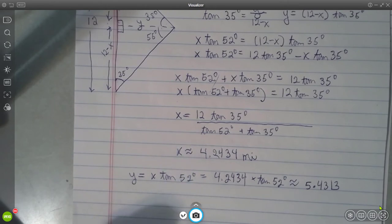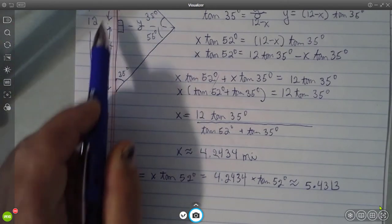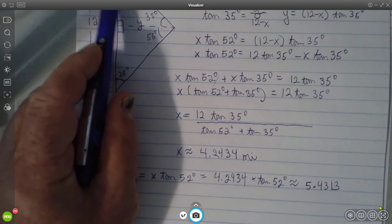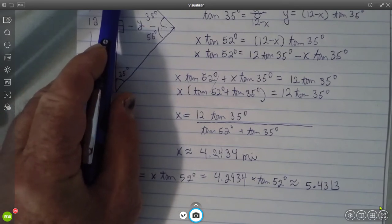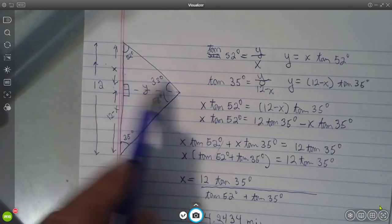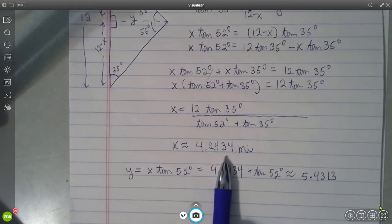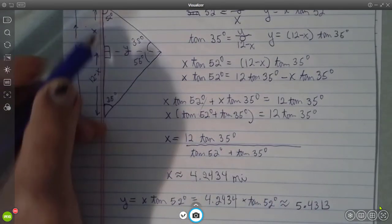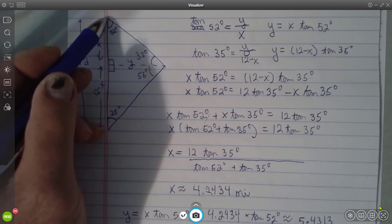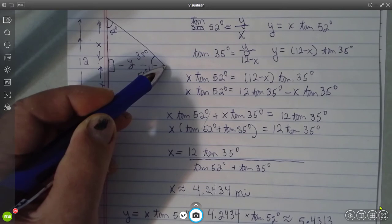The next question is, how far down the shore is that point? Well, from the location of the northern plane, when it got the signal, it would be x or 4.2434 miles. And how far is the ship from the plane at the moment the distress signal was picked up? Well, that you could compute with the Pythagorean theorem. Let's call that c.